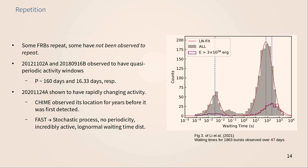A key observation is that some FRBs are known to repeat. For many years only one repeater was observed, but since then several more have been identified. The repetition of FRBs means we can rule out cataclysmic events like a supernova or binary neutron star merger being responsible for all of them — at least for the repeating ones, the thing that created it needs to survive the event. Of course we can't rule out the possibility that all FRBs repeat — the ones we only see once may be happening multiple times and we just haven't been lucky to see them again.